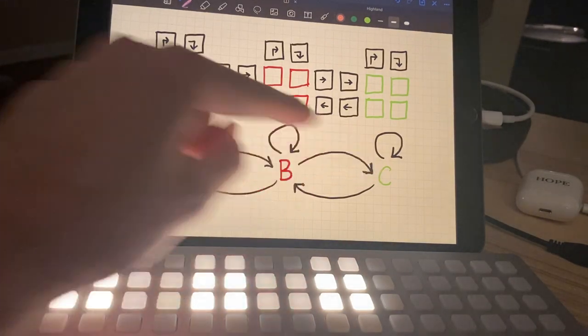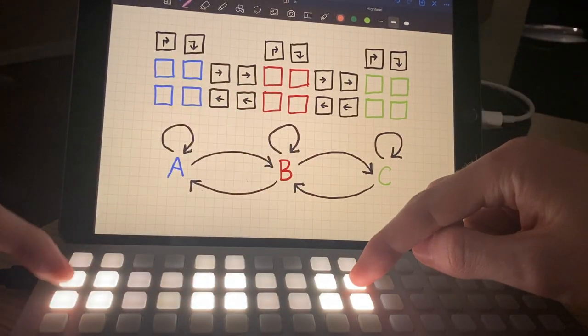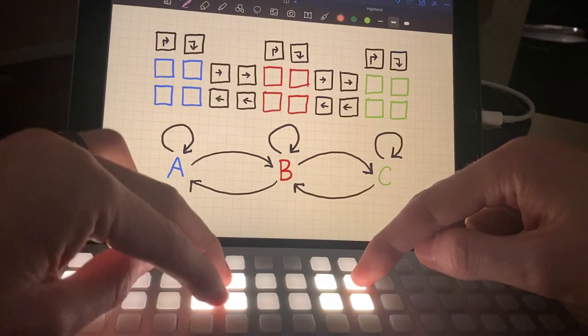We've got A, B, and C. These correspond to these paths of four here: A, B, and C.